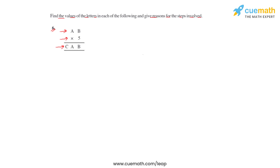We also need to keep in mind that these three letters represent single digits. In the product we have a two-digit number and a three-digit number, so we can say for sure that the value of a would not be equal to zero, and the value of c will also not be equal to zero.